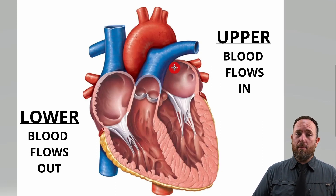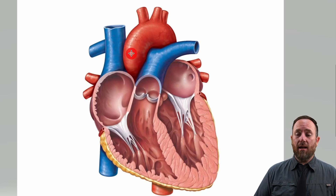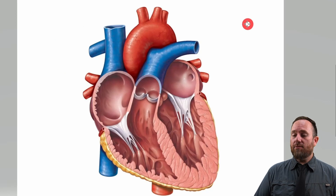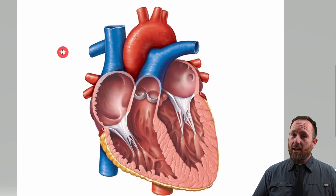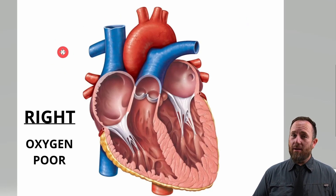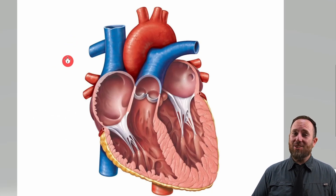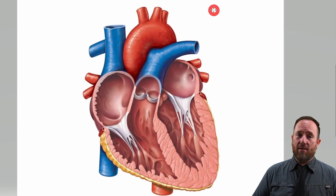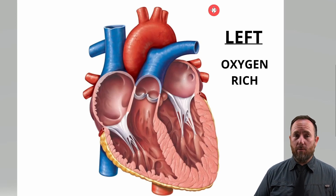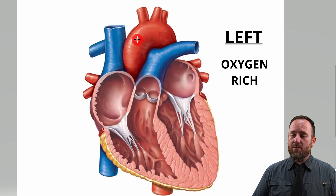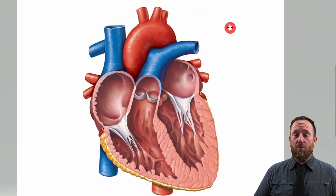Another important thing to remember, and this diagram shows it in color, is that the heart is also divided into a right and left side. The right side is always oxygen poor — remember that the right hand side is always oxygen poor. The left hand side of the heart is always oxygen rich, which means it's full of oxygen, and that's why it's usually indicated with a red diagram on a color scheme.